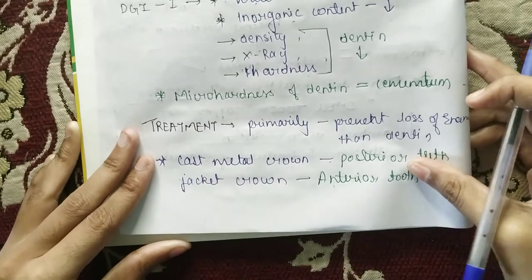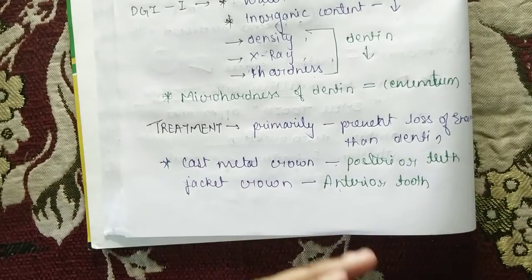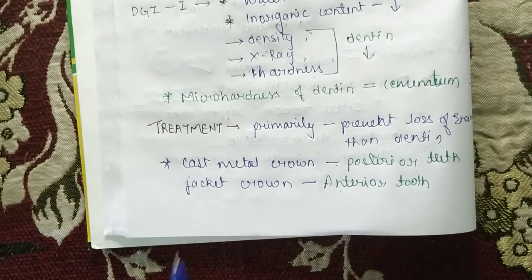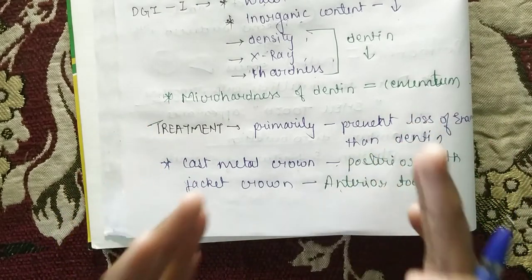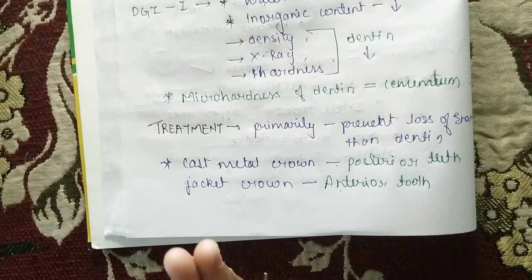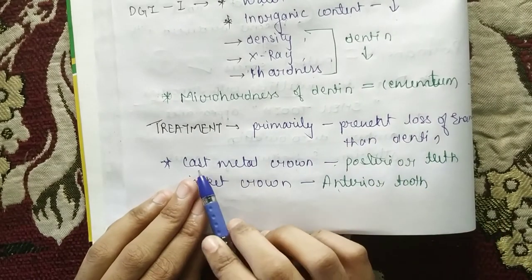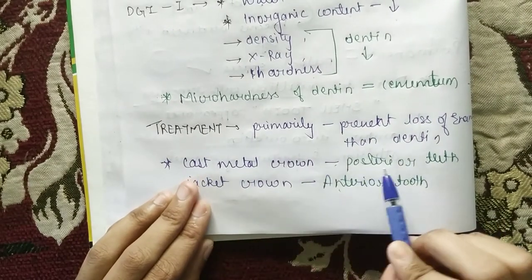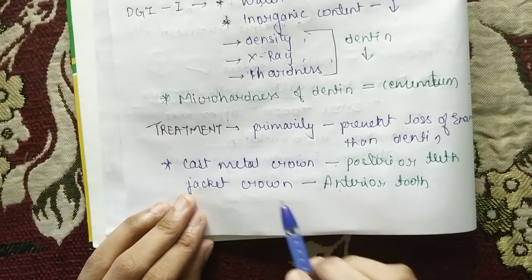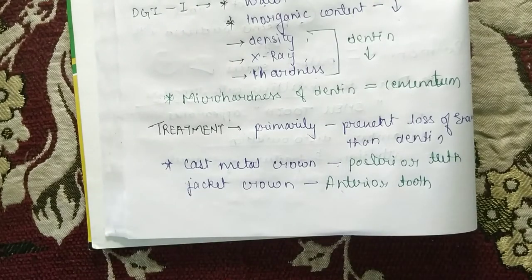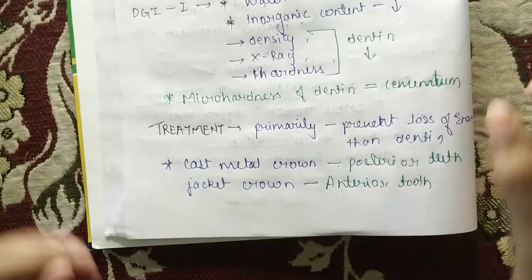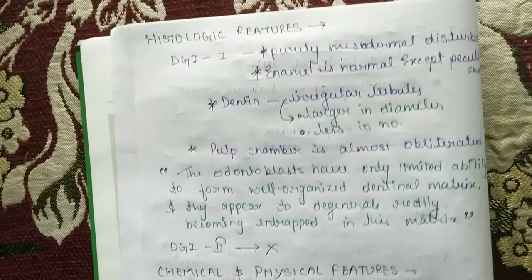Regarding treatment, the primary aim is to save enamel and prevent dentine loss. The most successful treatment is cast metal crowns for posterior teeth and jacket crowns for anterior teeth. With that, we have completed all the discussion about dentinogenesis imperfecta.